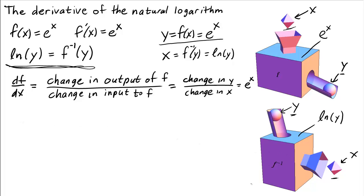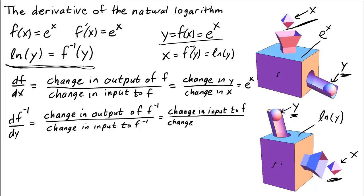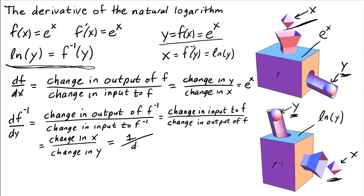Let's represent the derivative of f inverse in the same way we represented the derivative of f. So df inverse/dy equals the change in the output of f inverse over the change in the input of f inverse. Well, the output of f inverse is x — that's the input to f — and the input to f inverse is the output of f. So the ratio of change in output of f inverse to change in input of f inverse is the same as the ratio of the change in the input to f over the change in the output of f, or the change in x over the change in y. This is just the reciprocal of the derivative of f, which is e^x.